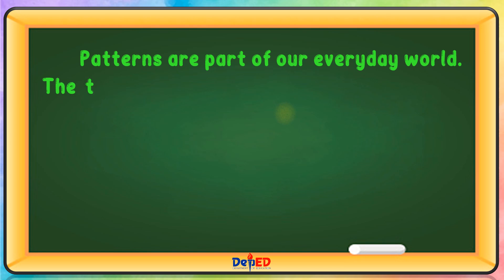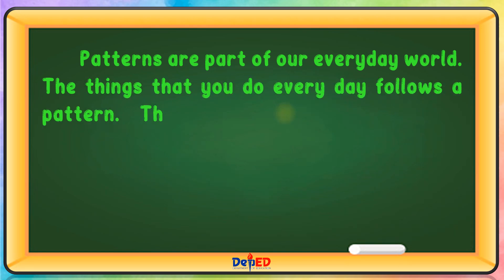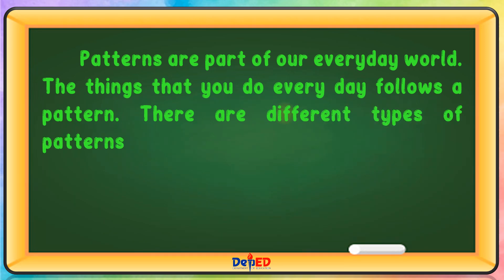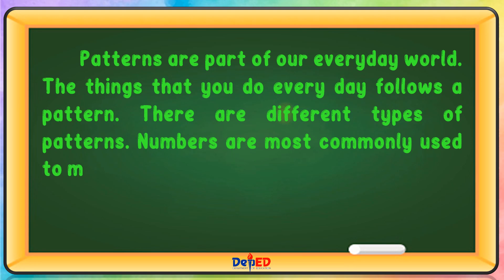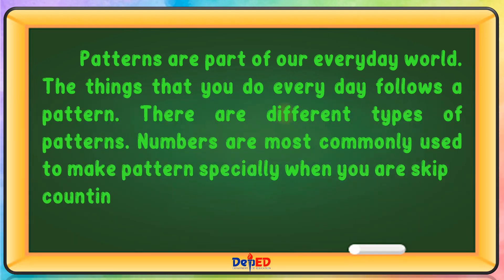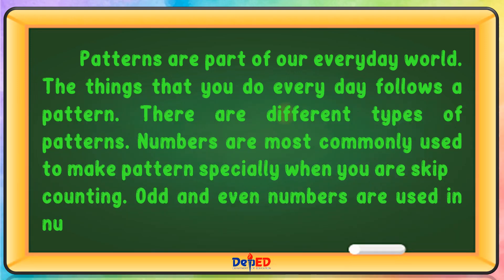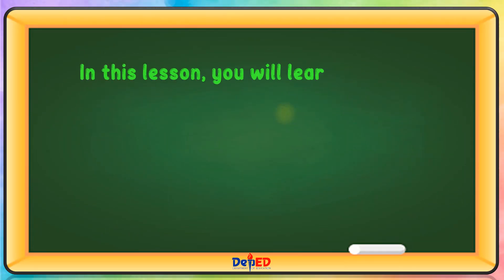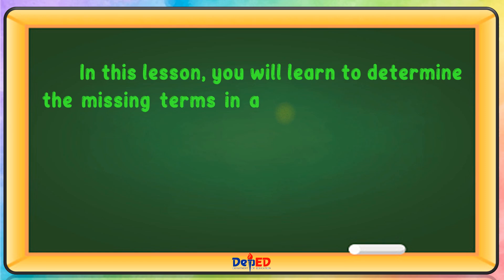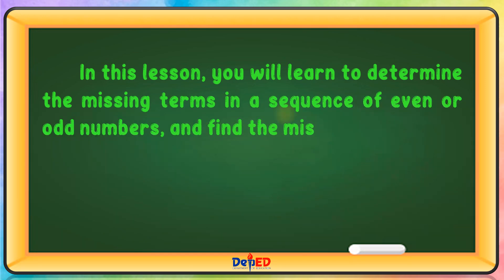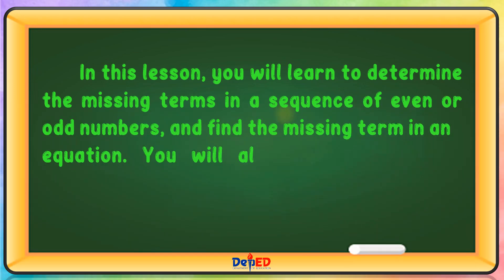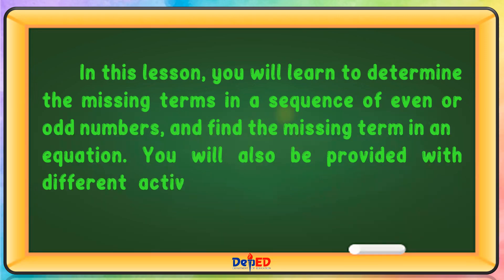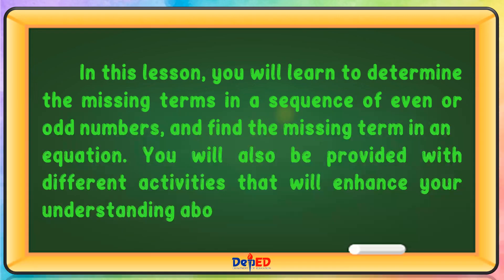Patterns are part of our everyday world. The things that you do every day follow a pattern. There are different types of patterns. Numbers are most commonly used to make patterns, especially when you are skip counting. Odd and even numbers are used in number sequences. In this lesson, you will learn to determine the missing terms in a sequence of even or odd numbers, and find the missing terms in an equation. You will also be provided with different activities that will enhance your understanding about the said topic.